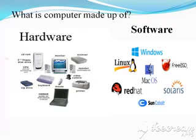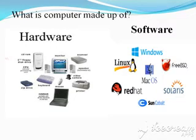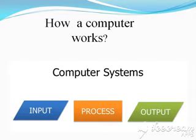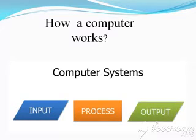Aap sirf abhi Windows or Linux yad rakhiye. Our second topic was the IPO cycle — how a computer works. Keyboard, CPU, and output: different kinds of software take input from the user, pass them to the CPU for processing, and then help to display the result or output.